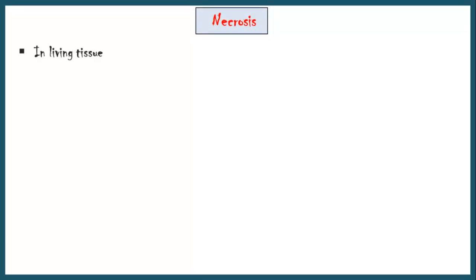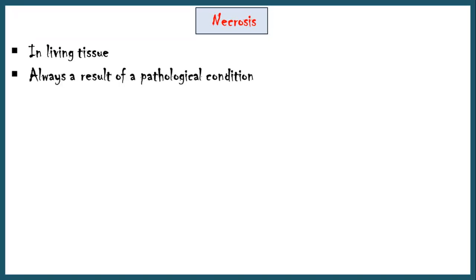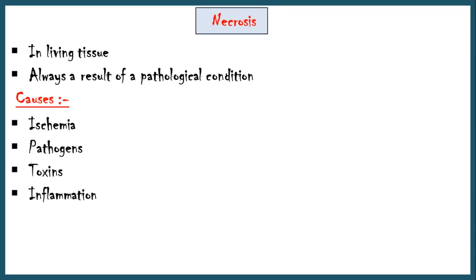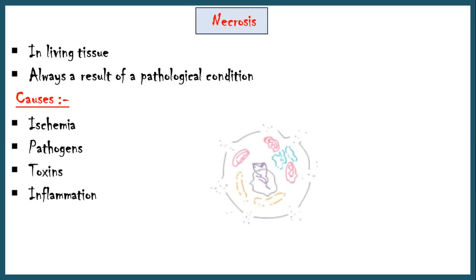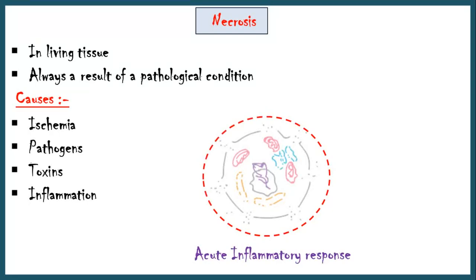Necrosis is a mechanism of cell death which occurs in living tissue, and it is always a result of a pathological condition. Common causes of necrosis include ischemia, pathogens like bacteria, viruses, fungi, toxins, and inflammation. In necrosis, the plasma membranes of cells get disrupted and cellular content leaks out. The body recognizes these elements as potential injurious agents and launches an acute inflammatory response at the site of necrosis. This inflammatory response is essential to lay the foundation of the healing process.